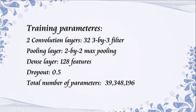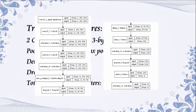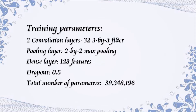Now let's look at the training performance. After several trials, we set the hyperparameters of our model as follows: we use 32 3×3 filters for convolution, then a 2×2 max pooling, followed by a dense layer with 128 feature outputs. A dropout with 15% probability is used to prevent overfitting. Therefore, the total number of parameters is around 14 million.